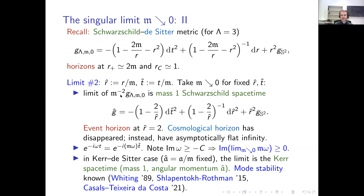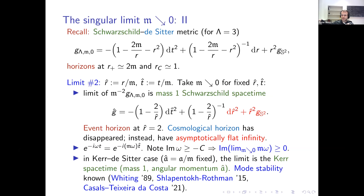So one limit retains the cosmological horizon but the black hole disappears; the other limit retains the event horizon but the asymptotic structure changes to asymptotically flat. As for scaling of quasinormal modes: if Im(ω) > −10, this corresponds to the rescaled frequency m·ω having Im(m·ω) > −10m → 0. So the black hole local observer only needs mode stability in the closed upper half-plane, not in some deep lower half-plane.